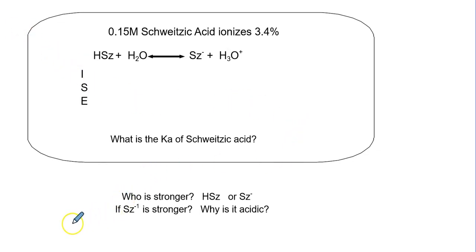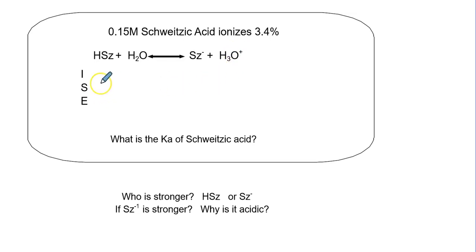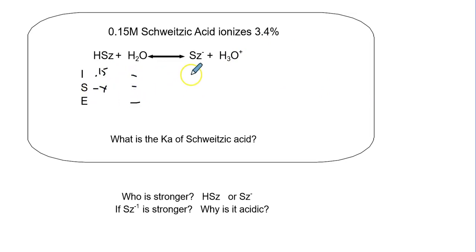Let's try another example. We have 0.15 moles per liter of schweizic acid that ionizes 3.4%. We set up the ICE table: initial is 0.15 for the acid, water not playing a role, zero and zero for products. Change is minus X, plus X, plus X.